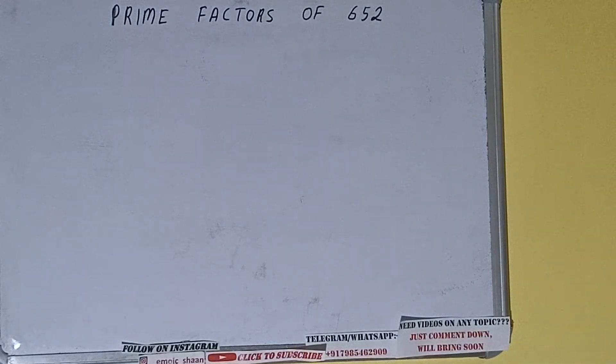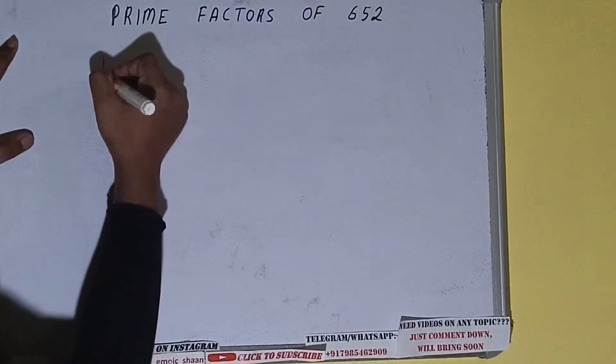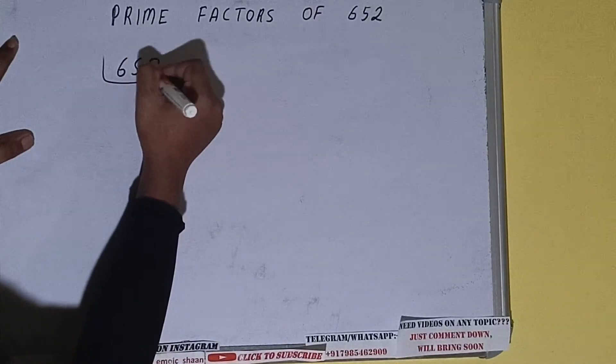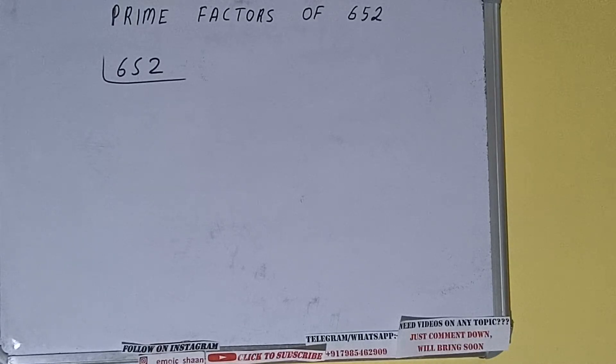Hello friends, in this video I'll be helping you with the prime factors of the number 652. So let's start. First of all, we need to write the number like this. The next thing we need to know about is what are prime numbers. Prime numbers are numbers that are divisible by one and the number itself, like 2, 3, 5, 7, and so on.